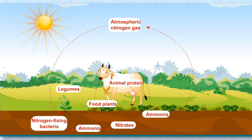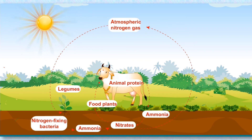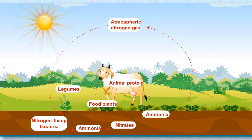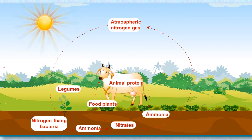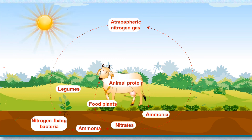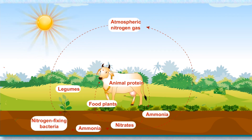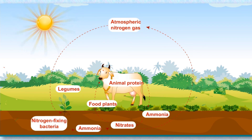From plants, nitrogen compounds are transferred to herbivores and then to carnivores. When these animals and plants die, they are decomposed by microbes. The proteins and other nitrogen-containing compounds are broken down into simpler compounds such as nitrates, urea, and ammonia. Some of these are absorbed by the soil and plants; others are converted back to nitrogen gas by yet another type of microbe. This process of circulation of nitrogen between the atmosphere, soil, plants, and animals is known as the nitrogen cycle.